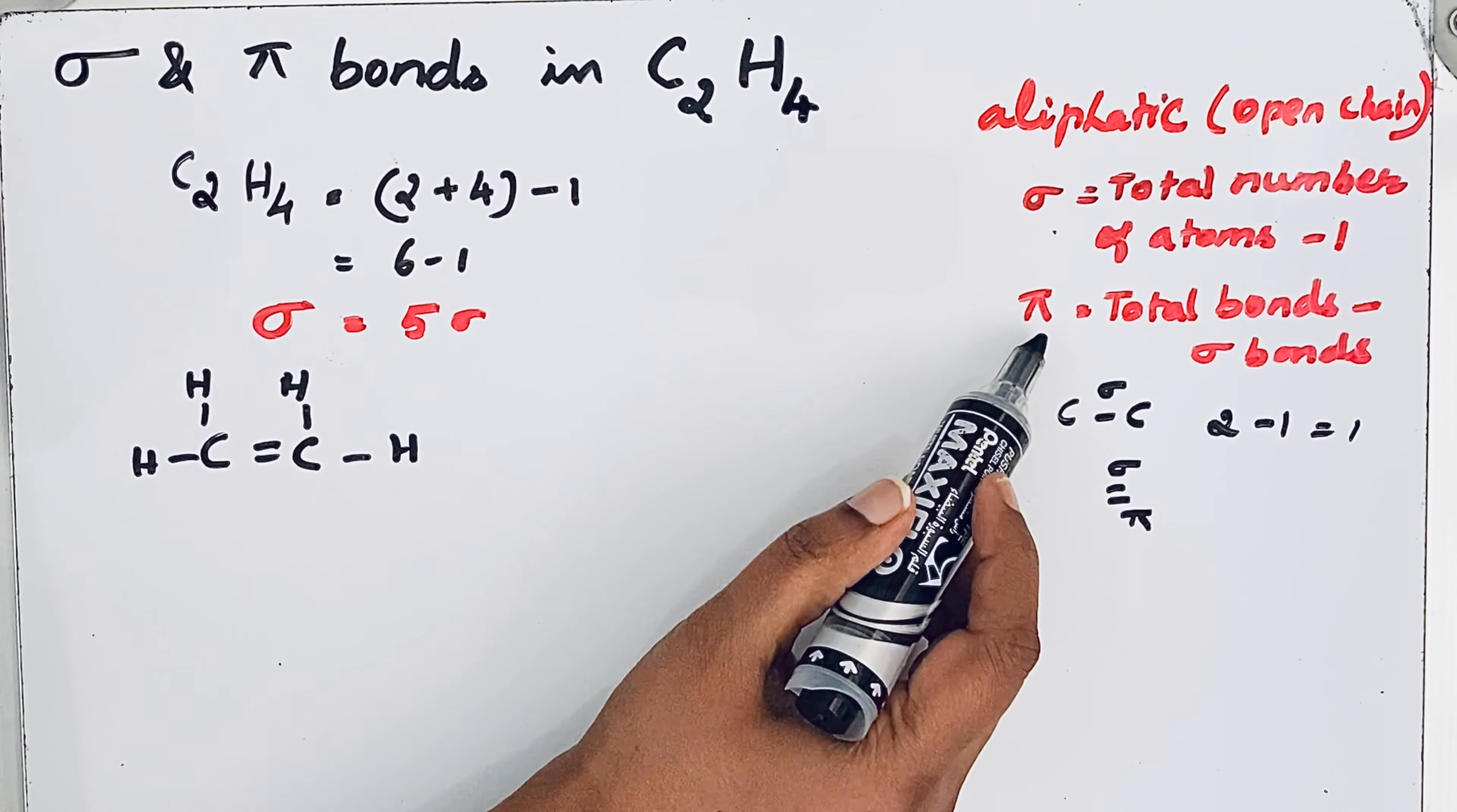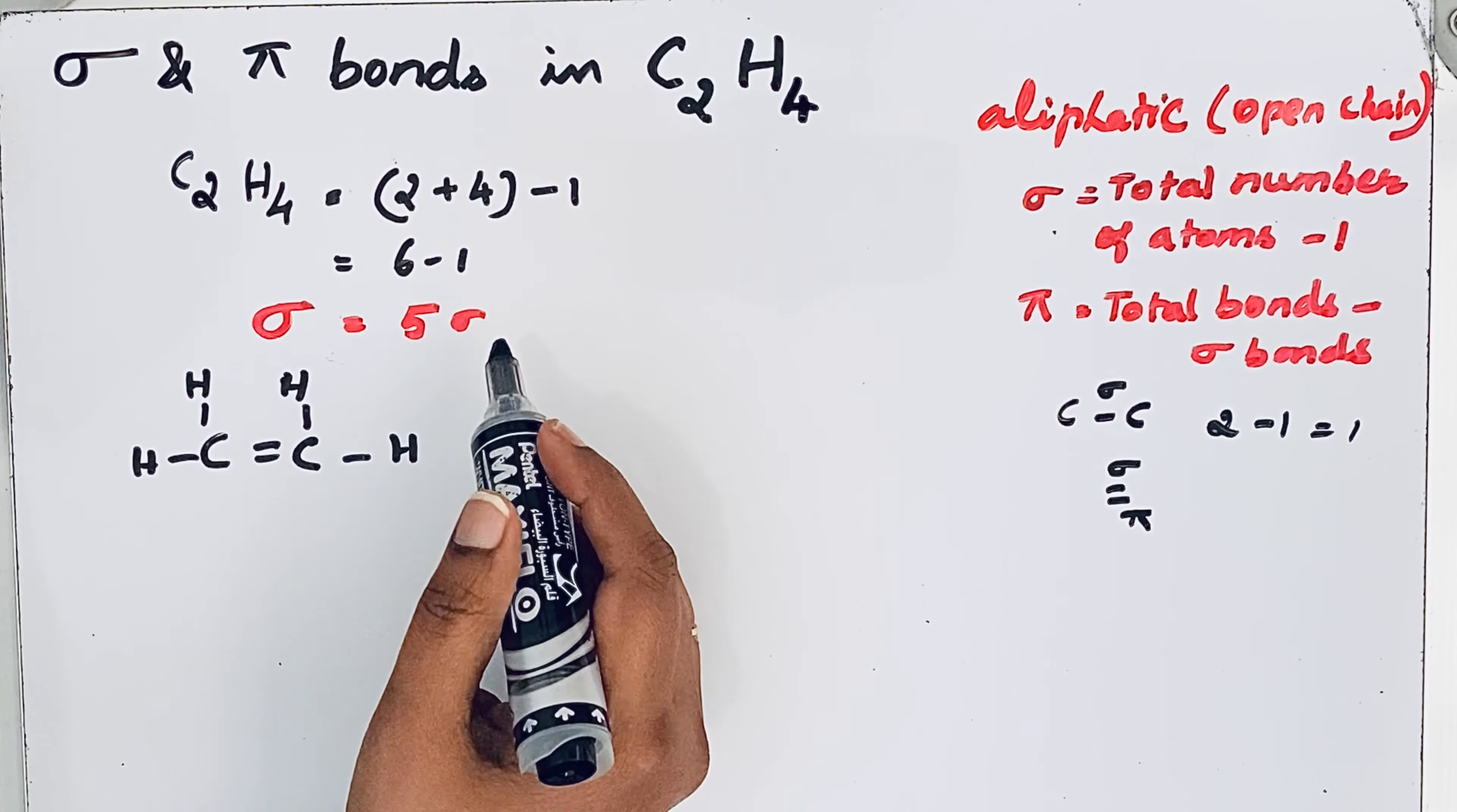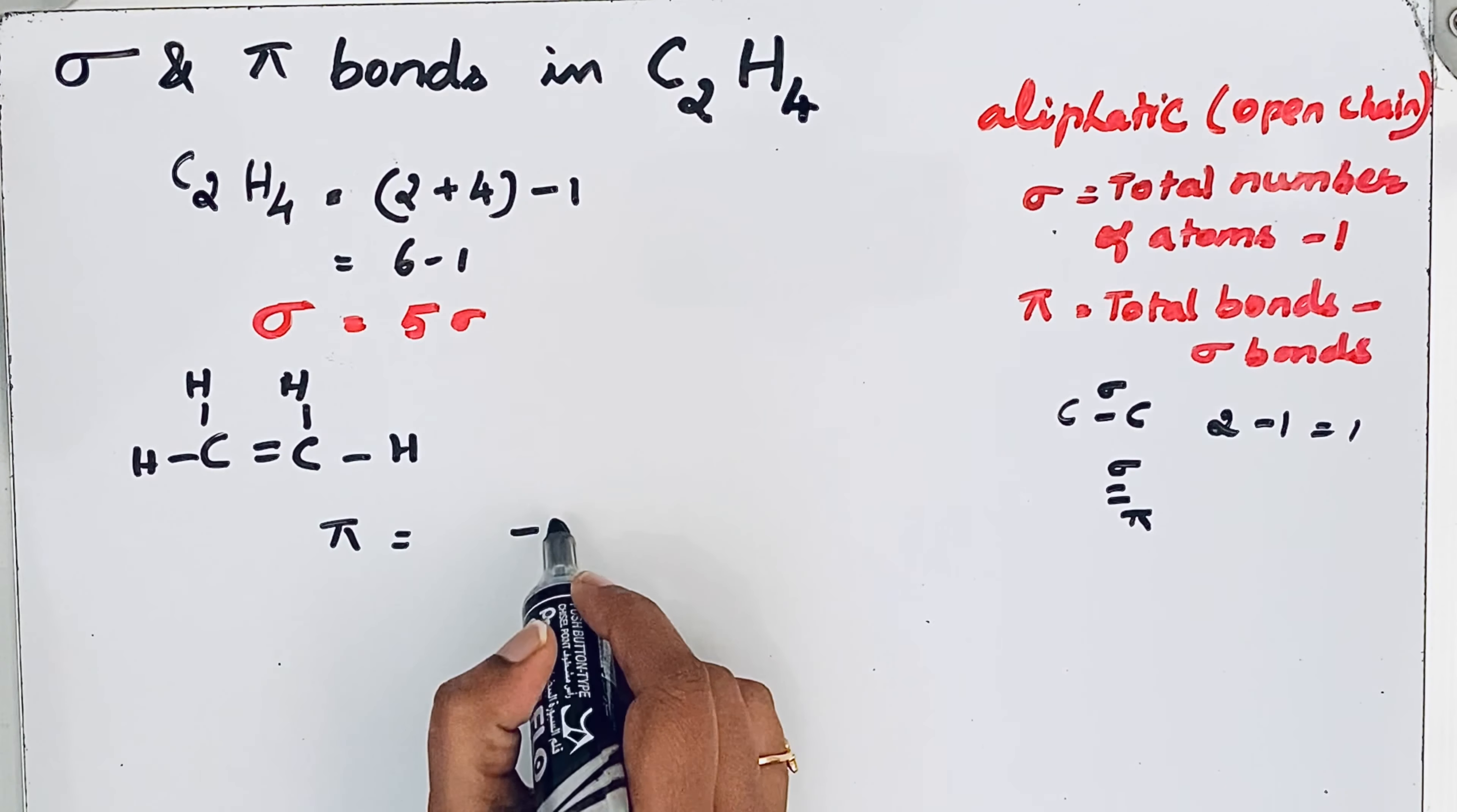What is the formula? Pi bond equals total number of bonds minus sigma bonds. Already we got the sigma bonds. Total 5 sigma bonds are present. So for pi bonds, we need to see the total number of bonds.